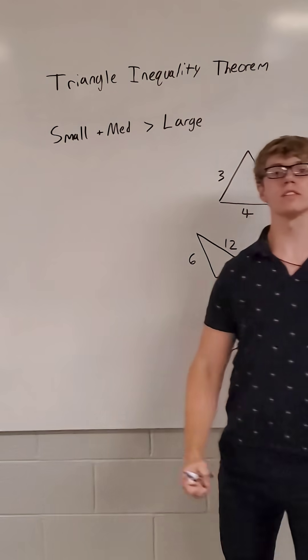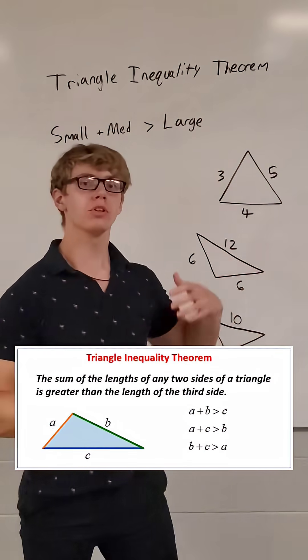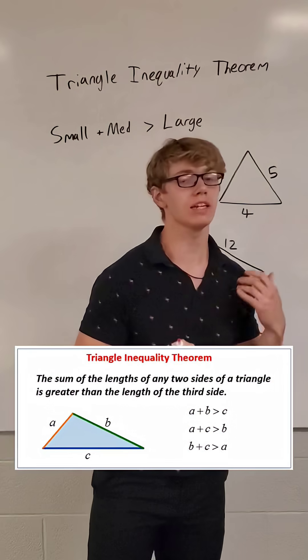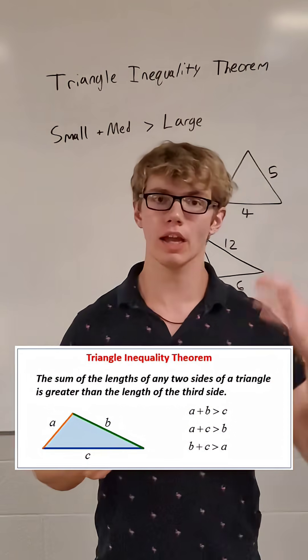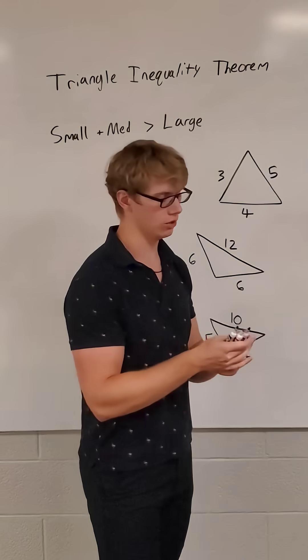The triangle inequality theorem states that when we add up the small and medium side lengths, it should be greater than the largest side length. Otherwise, we do not have a triangle.